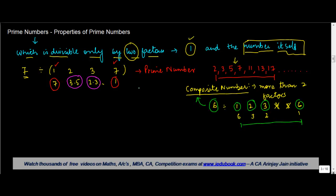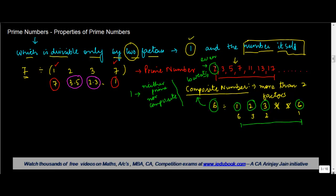Now, having known these two types of numbers, there are certain properties to be aware of. When we talk about prime numbers, two is the only even prime number that exists. It is also the lowest prime number, because before two the only number you have is one, and one is neither prime nor composite. Two is the lowest prime number and the only even prime number. All other even numbers are composite.